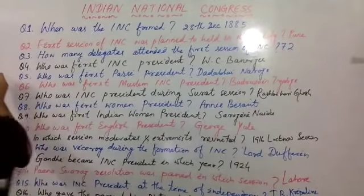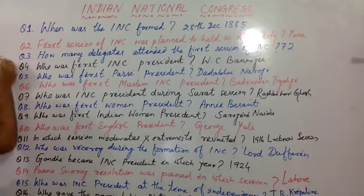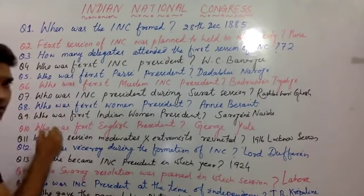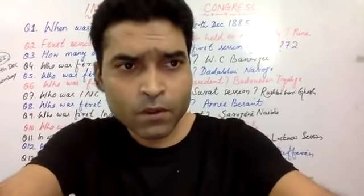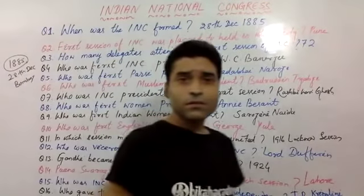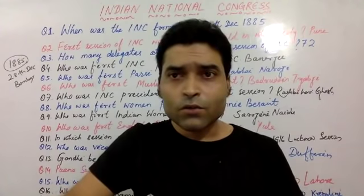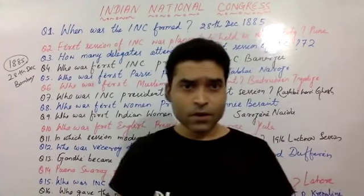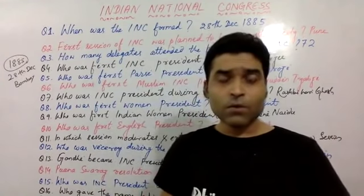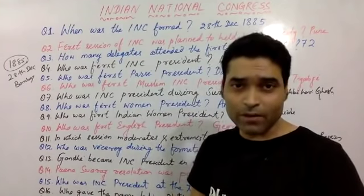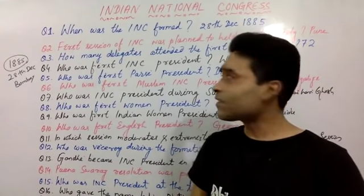Indian National Congress was established in 1885, on 28th December, in Bombay, present day Mumbai. The first meeting was actually planned to be held in Pune, but due to plague and some other reasons, it was shifted to Bombay, present day Mumbai. Anyway, let's start the questions.